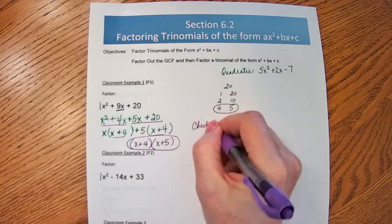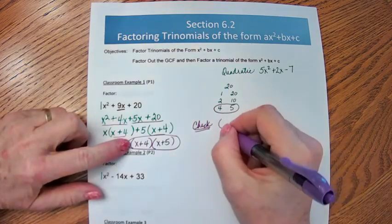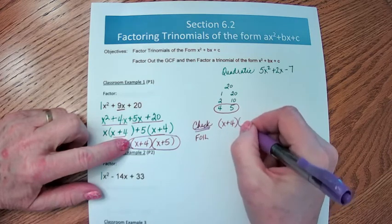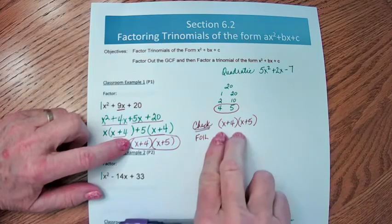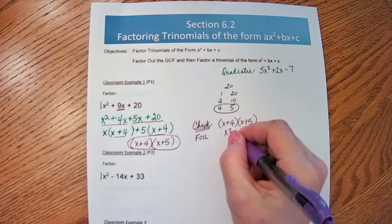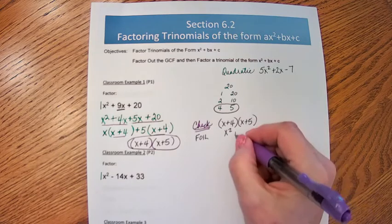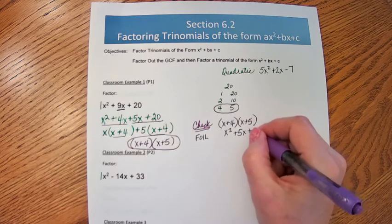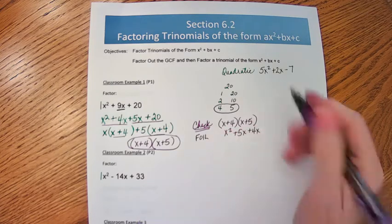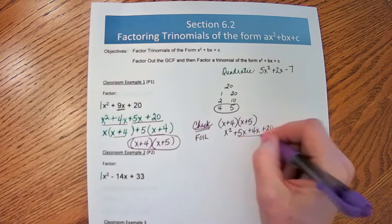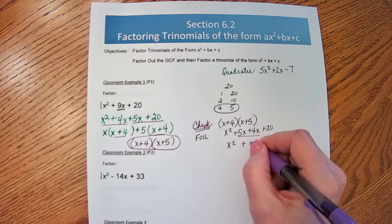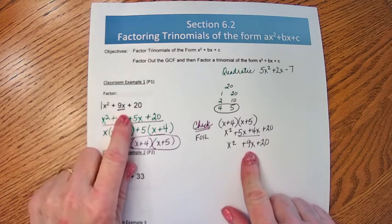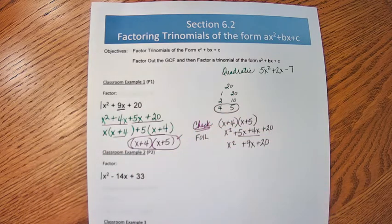And you definitely want to check these all the time by doing FOIL. What does (x + 4)(x + 5) equal? First, x times x is x². Outside is positive 5x. Inside is positive 4x. And last, 4 times 5 is 20. And combine your middle terms. 5x and 4x is 9x. Is that what I started with? Yes, it is. So I've just checked my answer.